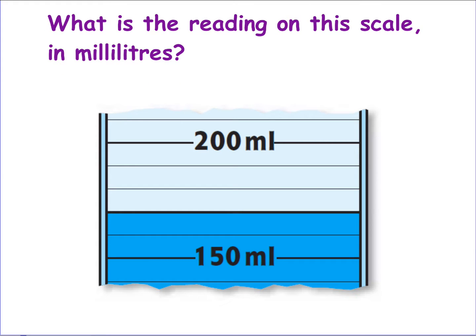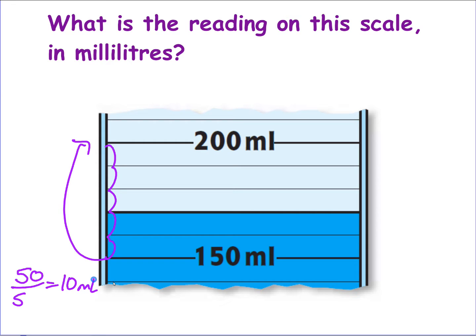Just like length and weight, you could be given a capacity scale to read. The golden rule is the same: count the big units and divide by the number of steps. From 150 to 200 is a gap of 50 millilitres divided by 5 steps — each step is 10 millilitres. So the reading is 170 millilitres. This type of scale reading is quite common at Level 1.